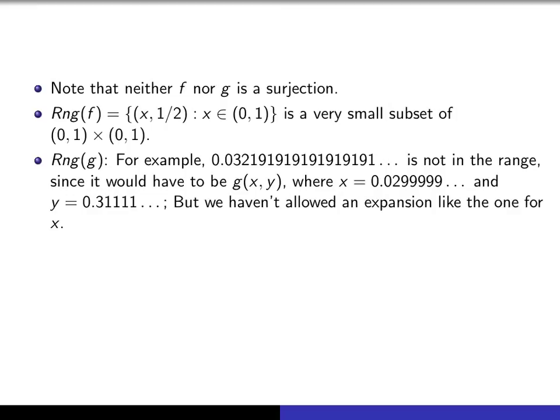the only xy for which g of xy could equal this would be an x that looks like that. This would have to be y, because that's the only way you can alternate these to produce that. But the catch is we haven't allowed a representation of any number in our (0,1) to look like that, because there we have the infinite string of nines. And therefore, this isn't in the range.